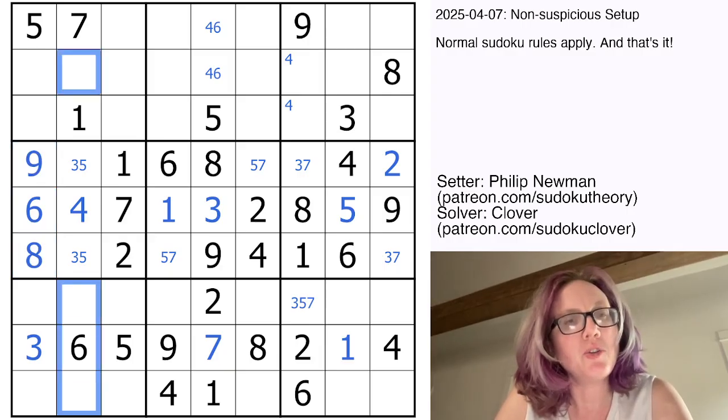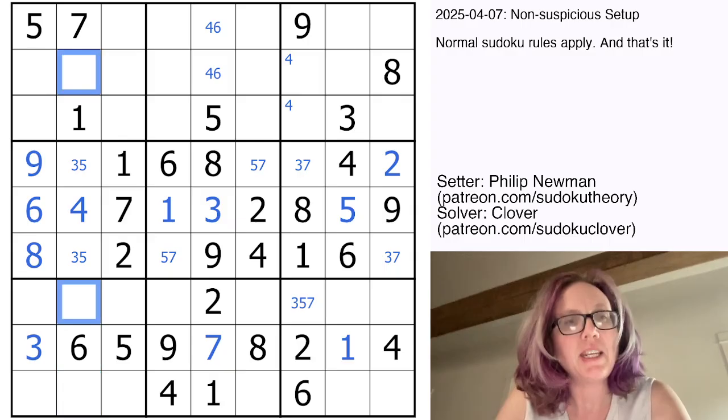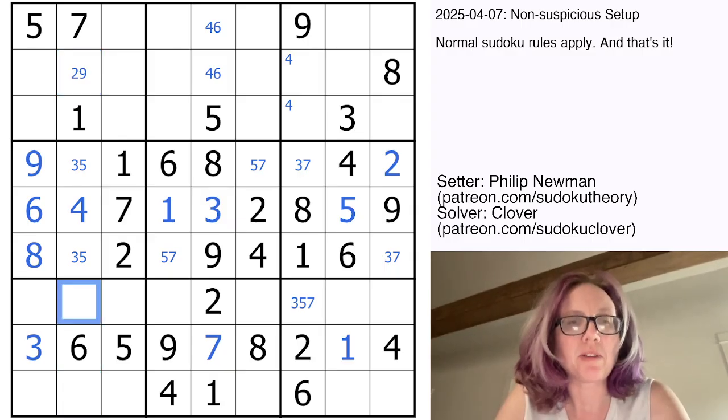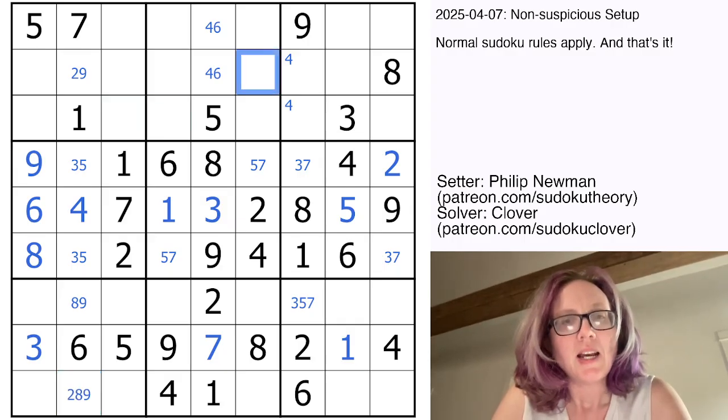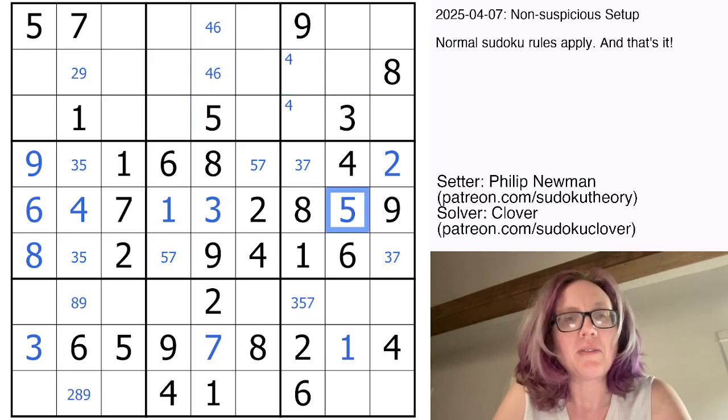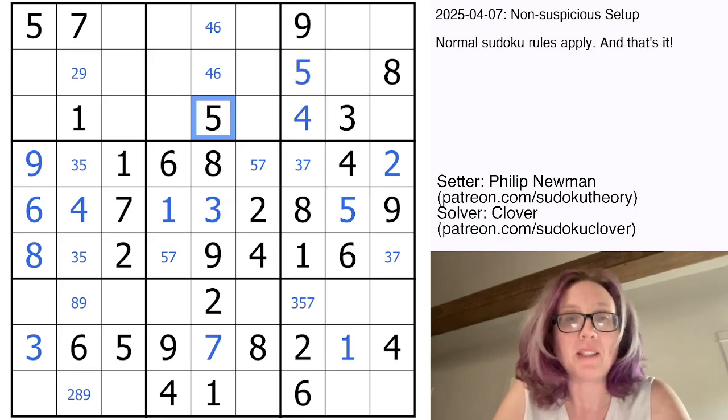Here, I need a 2, an 8, and a 9 to finish the column. And I can't disambiguate that yet, but I can mark them. I need a 5 in one of these two cells. Can't go there, so this is in fact a hidden 5, making this a 4.